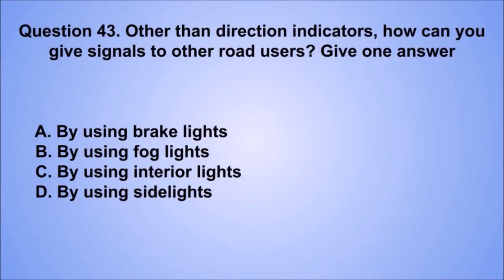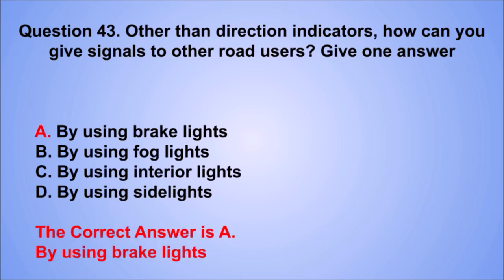Question 43. Other than direction indicators, how can you give signals to other road users? Give one answer. A: By using brake lights. B: By using fog lights. C: By using interior lights. D: By using side lights. The correct answer is A: By using brake lights.